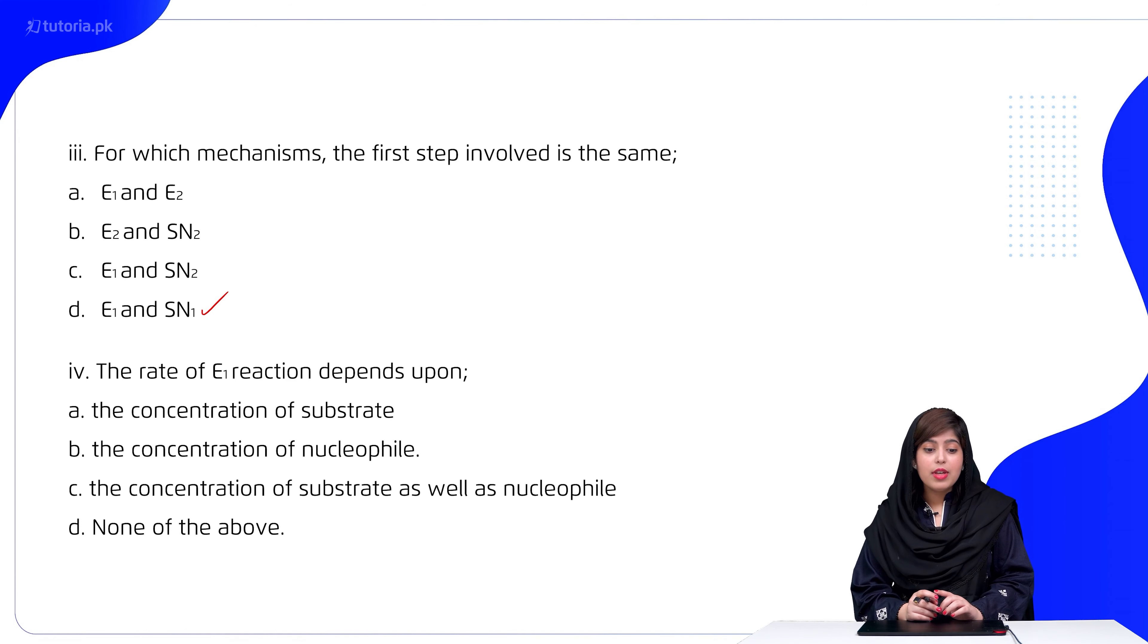The rate of E1 reaction depends upon the concentration of substrate, the concentration of nucleophile, the concentration of substrate as well as that of nucleophile, or none of above. So students, the rate of E1 reaction depends on the concentration of substrate.